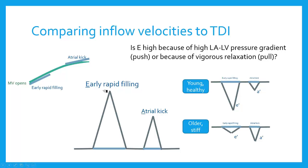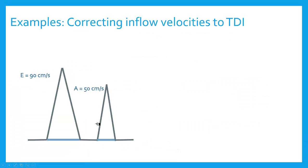You'll get your diastolic parameters — your E and A wave first — and you might get a fast E wave. You might ask yourself: is E high because of the push or the pull? Is there a high left atrial to left ventricular pressure gradient, or is there just vigorous relaxation? Because you can get the same E and A profile in a young healthy person or in a person with an old stiff ventricle. So the question is why, and that's where the ratio comes in.